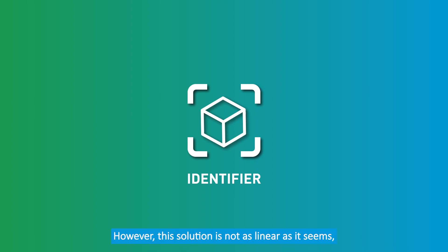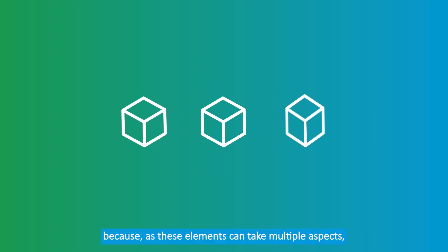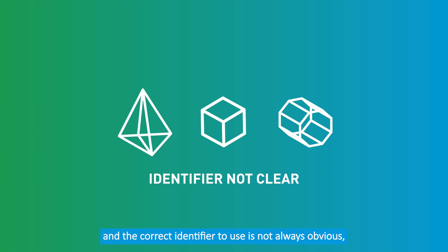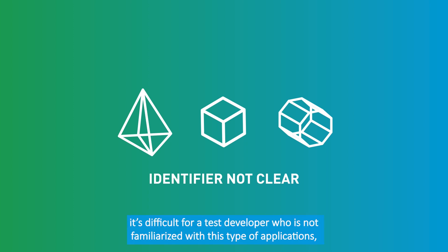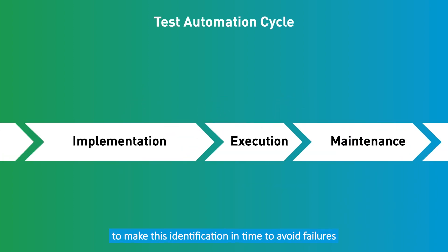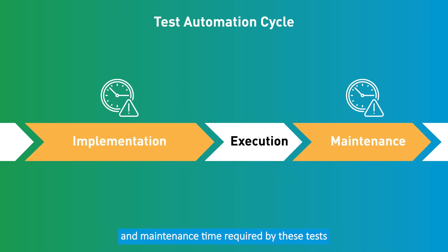However, this solution is not as linear as it seems, because these elements can take multiple aspects and the correct identifier to use is not always obvious. It's difficult for a test developer who is not familiarized with this type of application to make this identification in time to avoid failures and delays in the test automation process, which would result in an increase in implementation and maintenance time required by these tests.